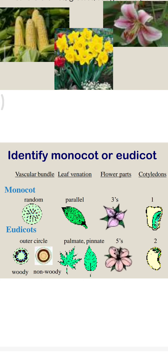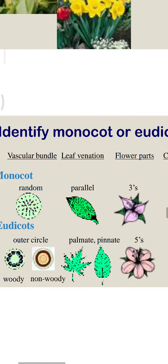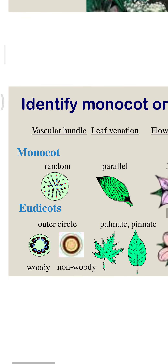You can identify on the basis of vascular bundle, leaf venation, flower parts, and cotyledons. Monocot vascular bundles are random; dicot vascular bundles form an outer circle. Dicots can be woody or non-woody.